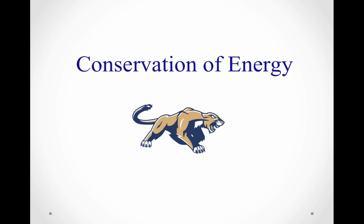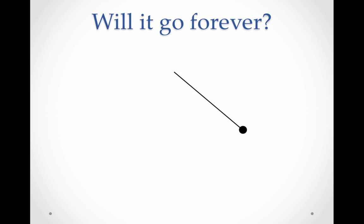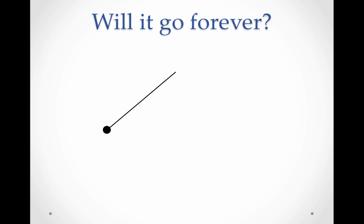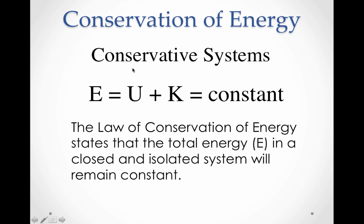Conservation of energy. When you watch a pendulum, it seems like it will just keep going back and forth forever. We know that it won't keep going back and forth forever, but it will go back and forth for a long time. Conservation of energy in a conservative system tells us why a pendulum will go back and forth for a long time and seemingly go forever. That's because the total energy in the system is made up of two parts: the potential energy and the kinetic energy, and those two parts remain relatively constant in a conservative system.